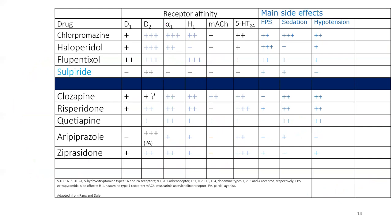This table shows the main receptors and the effects of the major drugs on those receptors. The top ones are the typical or classical antipsychotics, and the bottom ones are the newer or atypical antipsychotics. For the dopamine D2 receptor, we have chlorpromazine, haloperidol, and zuclopenthixol.